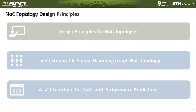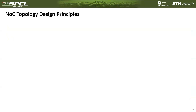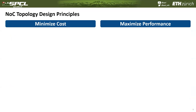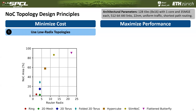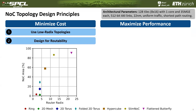Let's have a look at our design principles. We divide them into two categories: principles to minimize cost, and principles to maximize performance. To minimize cost, we should use low-radix topologies, because the area of most on-chip routers scales quadratically with the router radix. We can see this by plotting the network on chip area on the y-axis versus the router radix on the x-axis — when the router radix is increased, the area increases. A second principle to minimize cost is to design for routability: when designing the topology, we should already consider the routing in the VLSI backend and try to avoid routing congestion. To maximize performance, we should use low-diameter topologies. The network diameter is the maximum number of router-to-router hops that a packet takes from its source to its destination.